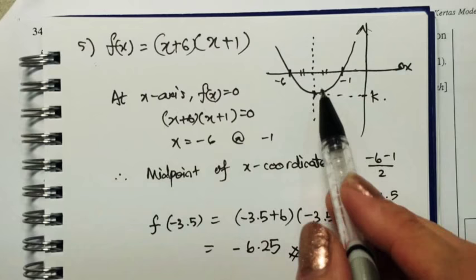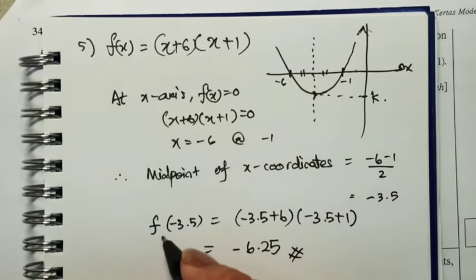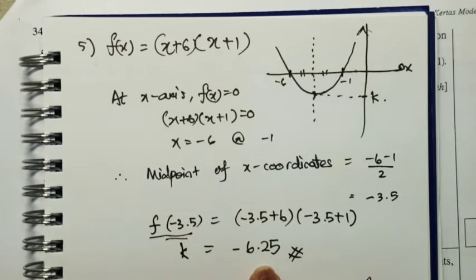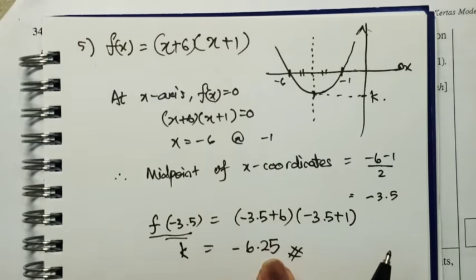Because when x is negative 3.5, the image is k. So that is our answer for question number 5. When we give this as the answer, we will get one point. The final answer is worth three marks.